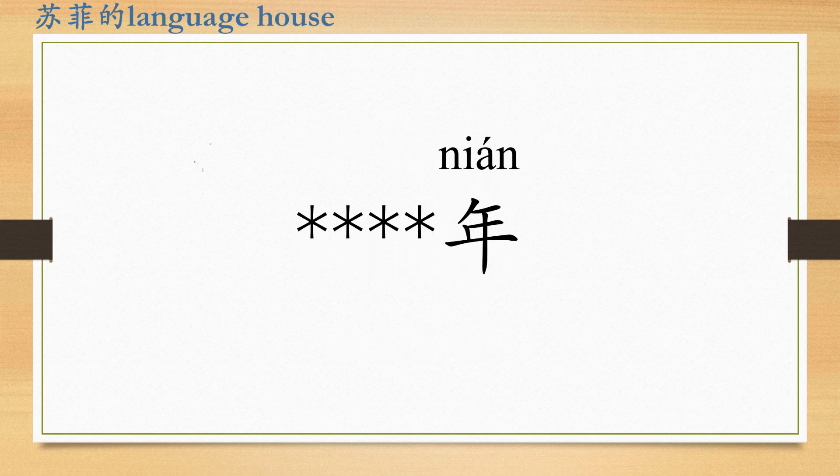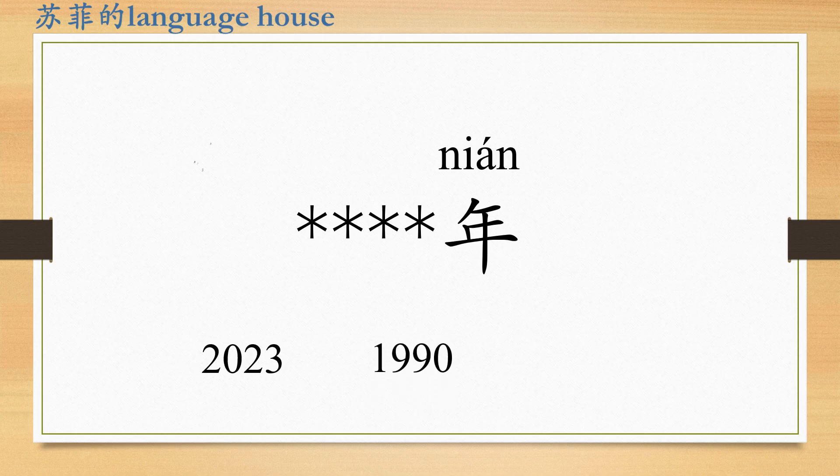If we want to express a particular year, we could say the number and then Nian. For example, now it's 2023. We could say erling er san nian. Another example: yijiu jiu jiu nian.